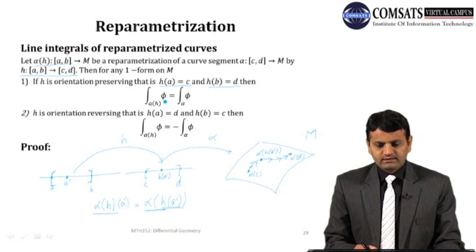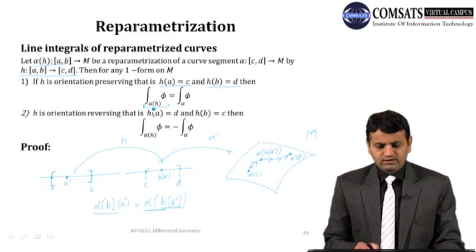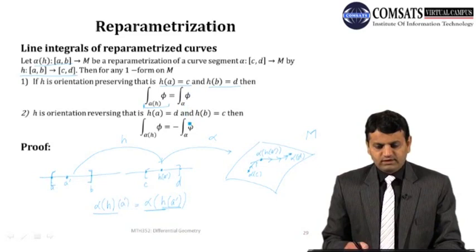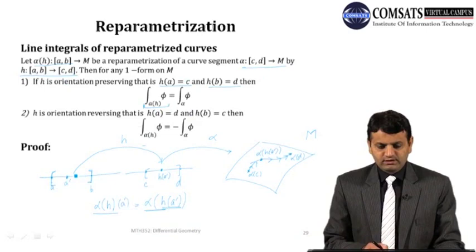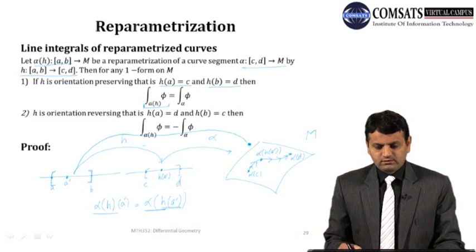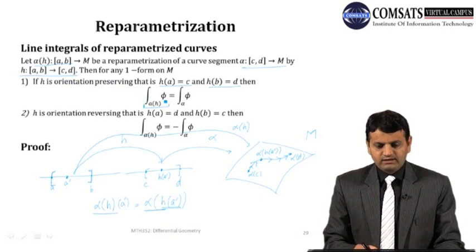If h is orientation preserving, then the line integral of φ along α∘h is the same as the line integral of φ along α. But if h is orientation reversing — h(a) = d and h(b) = c — then the starting point of α∘h is α(d), which is the end point of α, so the orientation is reversed and we traverse the curve in the opposite direction.